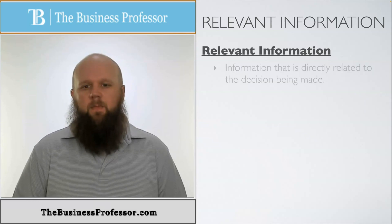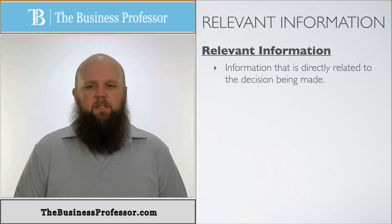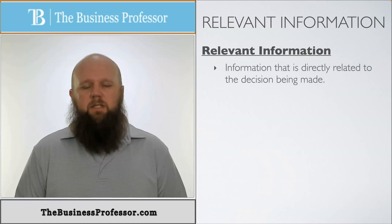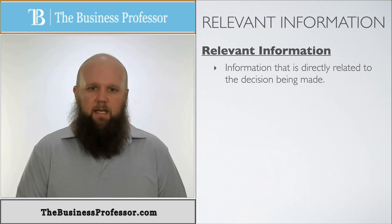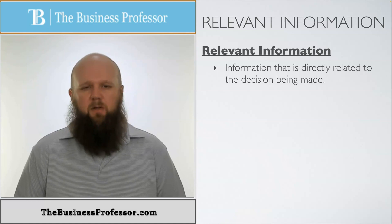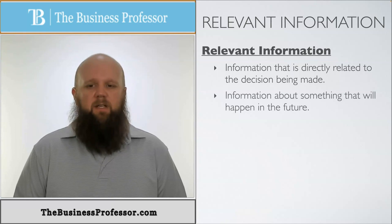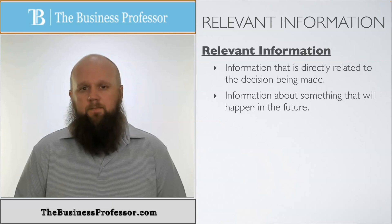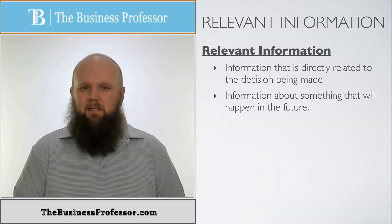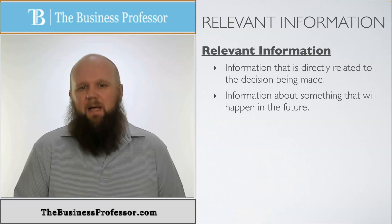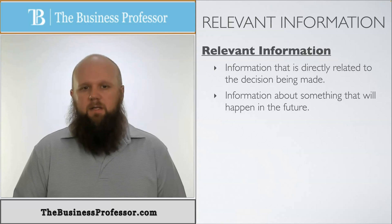So what is relevant information? Well, relevant information is information that, one, is directly related to the decision being made. Obviously, it has to connect to whatever the decision is being made — you don't want to use information that has nothing to do with whatever you're trying to decide upon. Two, this is information that leads to something that will happen in the future. This is going to have repercussions in the future, not necessarily anything else, because we don't care about the past. The past is the past. We're not going to take past information and use it for future decision making.